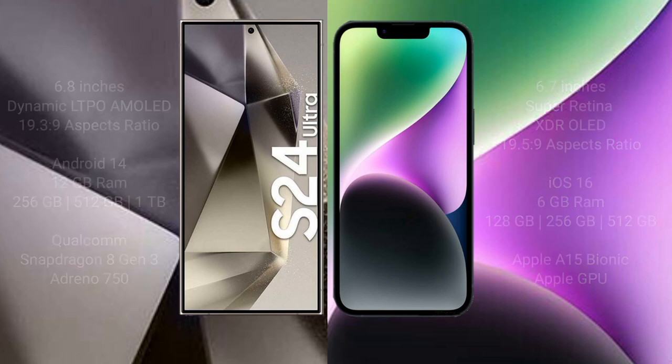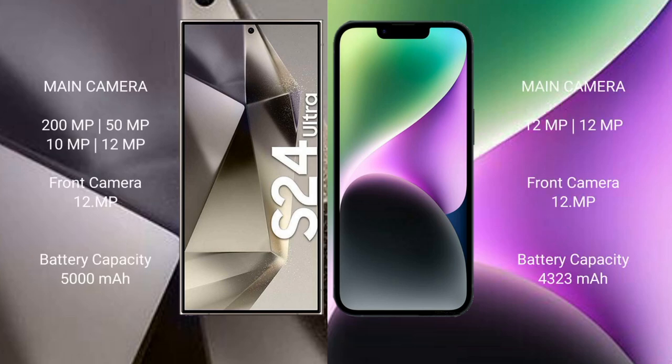The Samsung Galaxy S24 Ultra features a quad rear camera setup: 200MP + 50MP + 10MP + 12MP, with a 12MP front camera. The iPhone 14 Plus features a dual rear camera setup: 12MP + 12MP, with a 12MP front camera. The Samsung Galaxy S24 Ultra has a 5000mAh battery with 45-watt fast charging support.